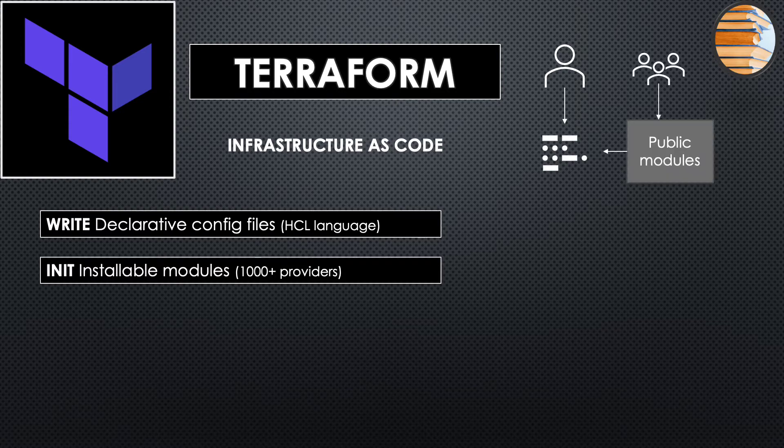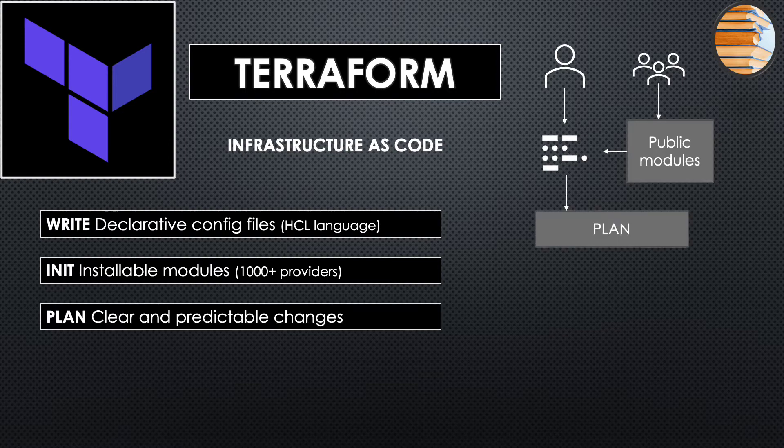You write this by using modules which are already exposed by the open source community. There are 1,000+ providers at the moment, like AWS, Azure, Kubernetes, Docker, et cetera. Once you have written the config file, you run a plan command to determine what resources need to be created, modified, or deleted.